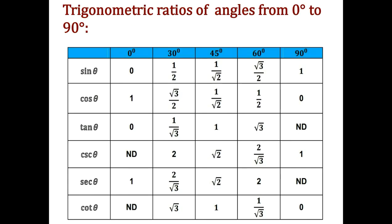Trigonometric Ratios of Angles from 0° to 90°: The standard angles are 0°, 30°, 45°, 60°, and 90°. The value of sin theta increases from 0° to 90°, while the value of cos theta decreases from 0° to 90°. The values of sin are: sin 0° = 0, sin 30° = 1/2, sin 45° = 1/√2, sin 60° = √3/2, and sin 90° = 1.